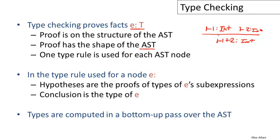The proof has the same shape as the abstract syntax tree. You can look at this proof as a tree. The root of the proof tree is at the bottom, whereas we often draw the abstract syntax tree with the root at the top. But the important thing is the proof has the shape of the AST, and there's one type rule used for each AST node. There's a direct correspondence between the structure of the proof and the shape of the abstract syntax tree.